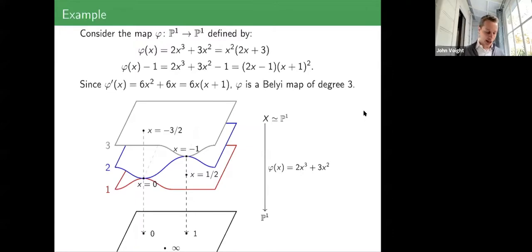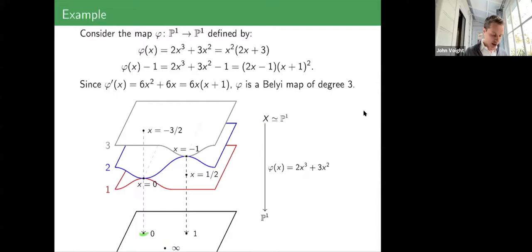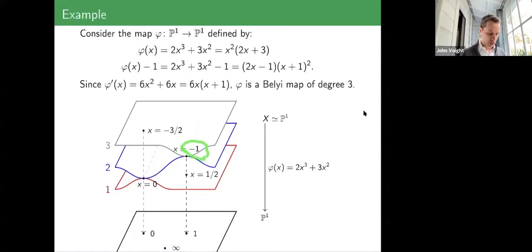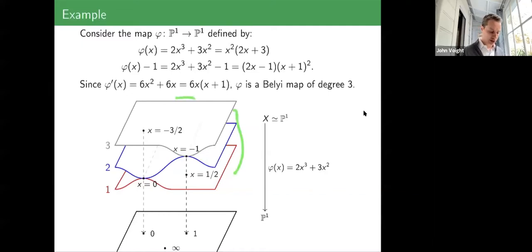To visualize what branched covers look like: imagine P1 as two-dimensional. There are generically three sheets above P1. Above 0 and 1, two sheets come together at 0 and at -1, like the local Z → Z² map. If you're on the gray sheet and loop around, you end up on the blue sheet, and looping back returns you to gray — that's how the two sheets come together.